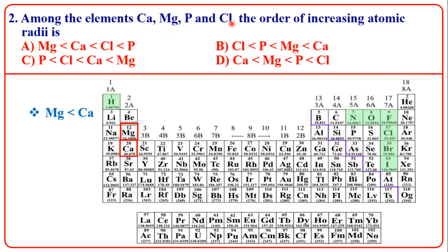Next, phosphorus and chlorine are in the same period — the third period. As we move from left to right along the period, atomic radius decreases.